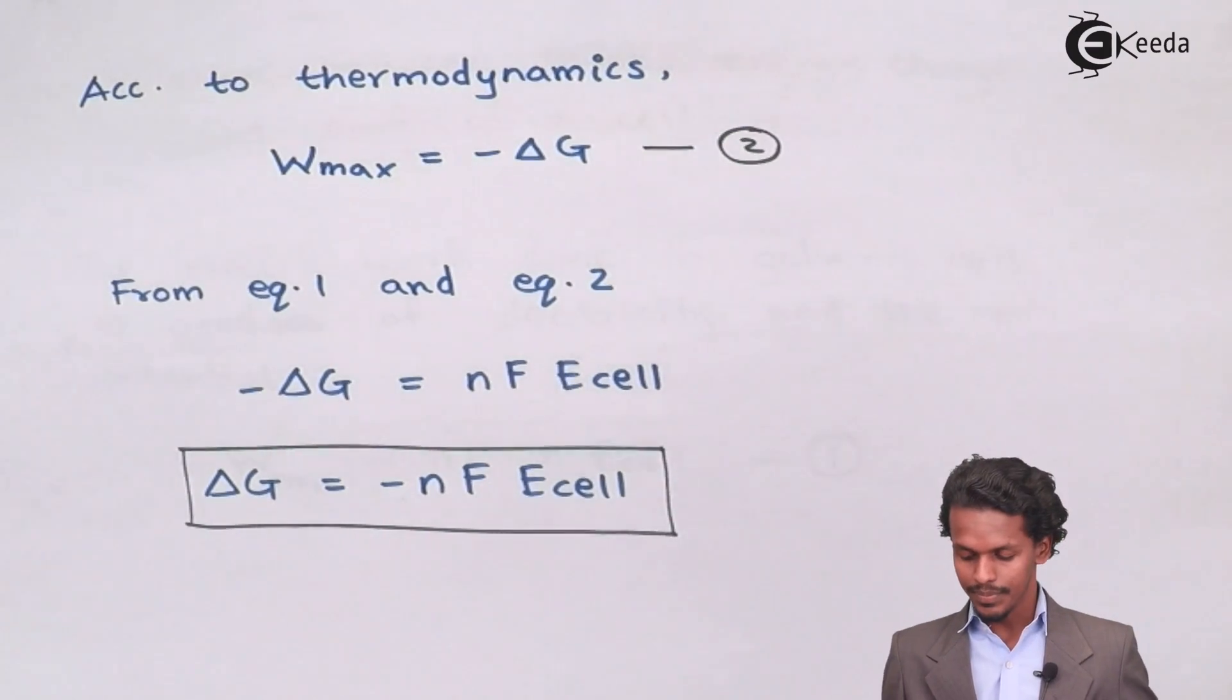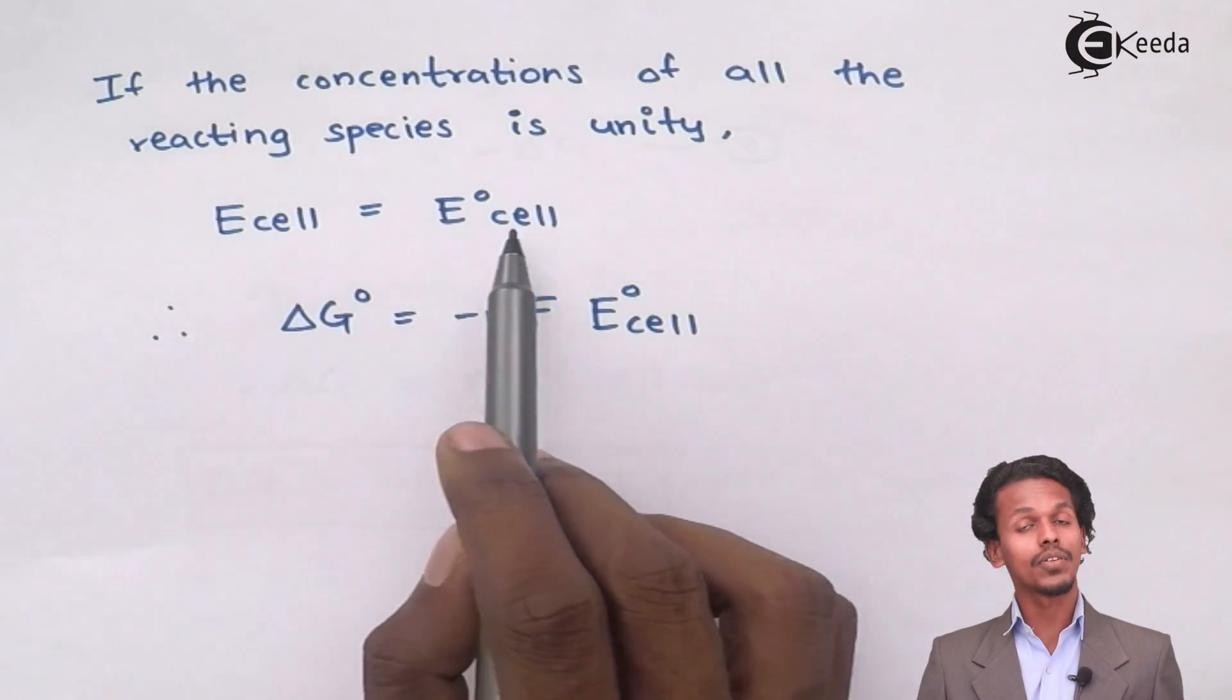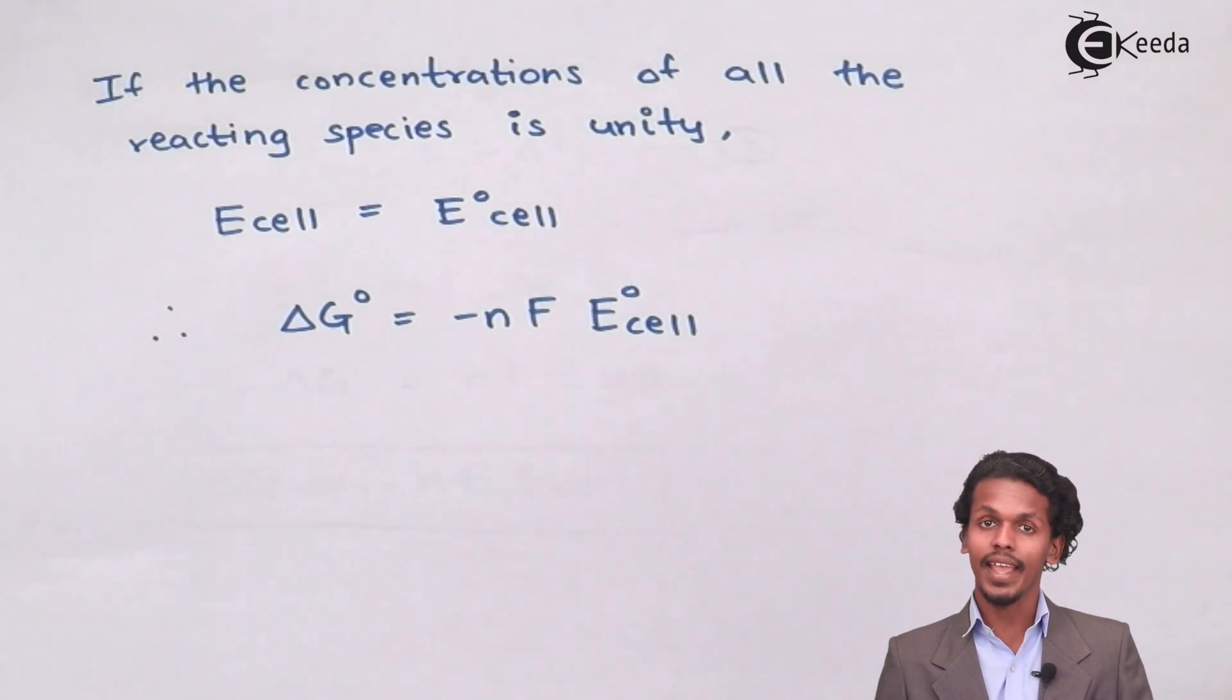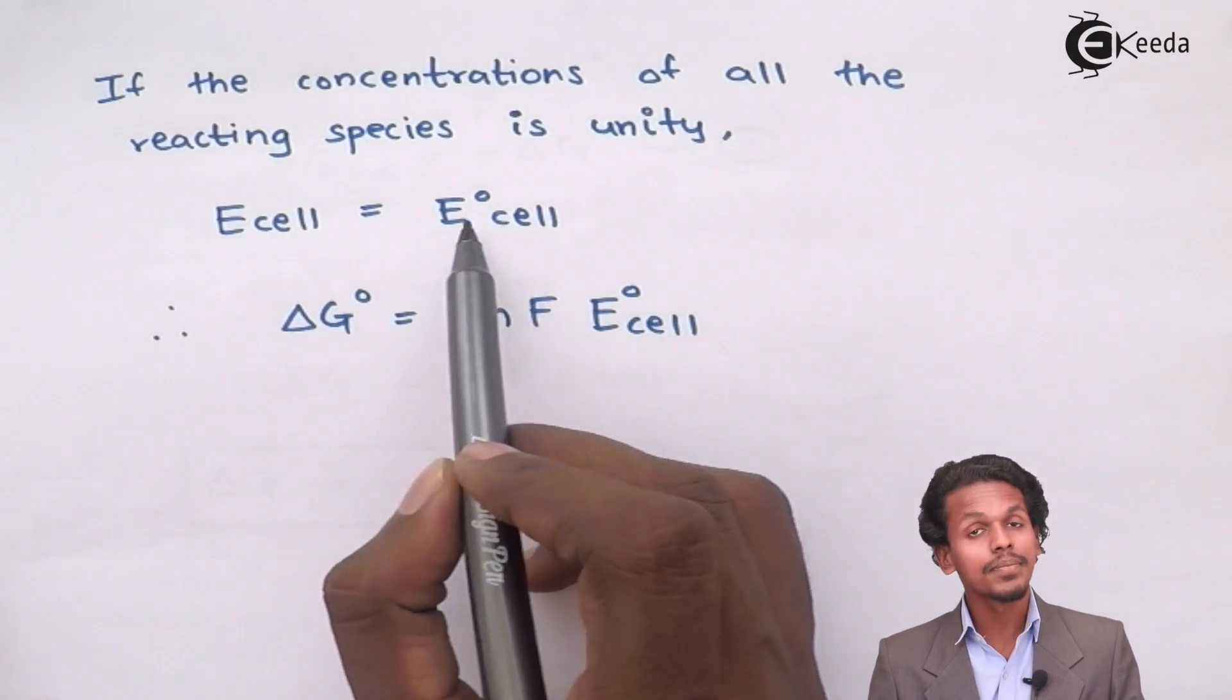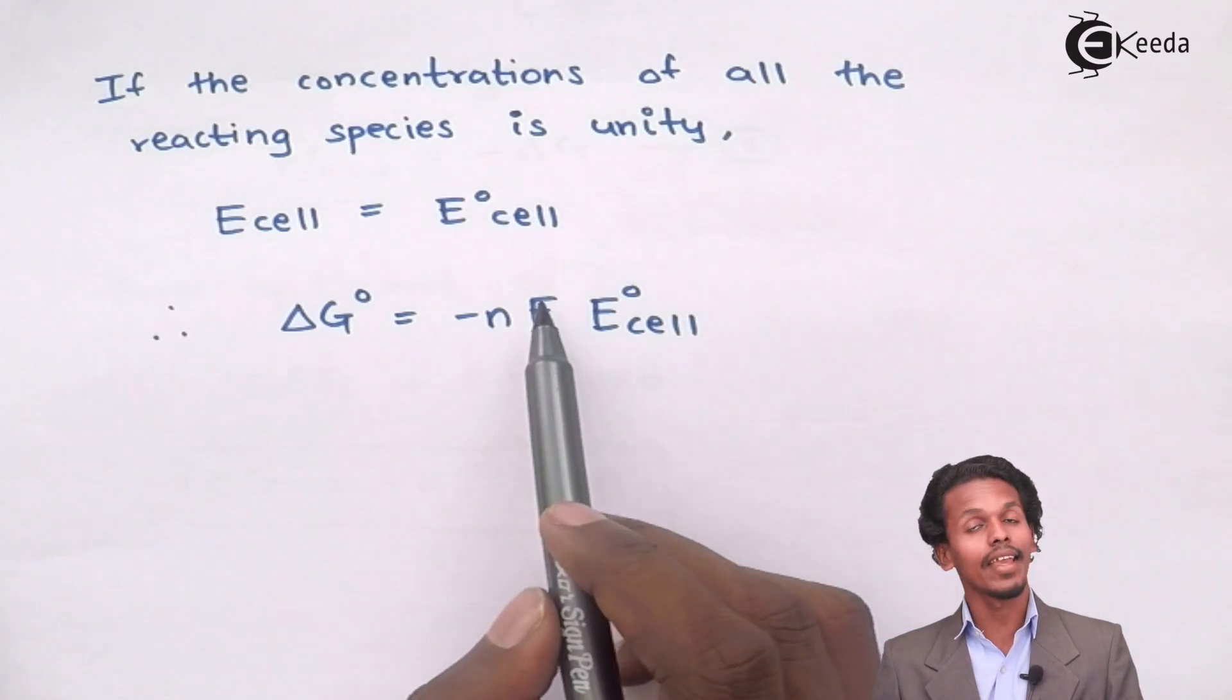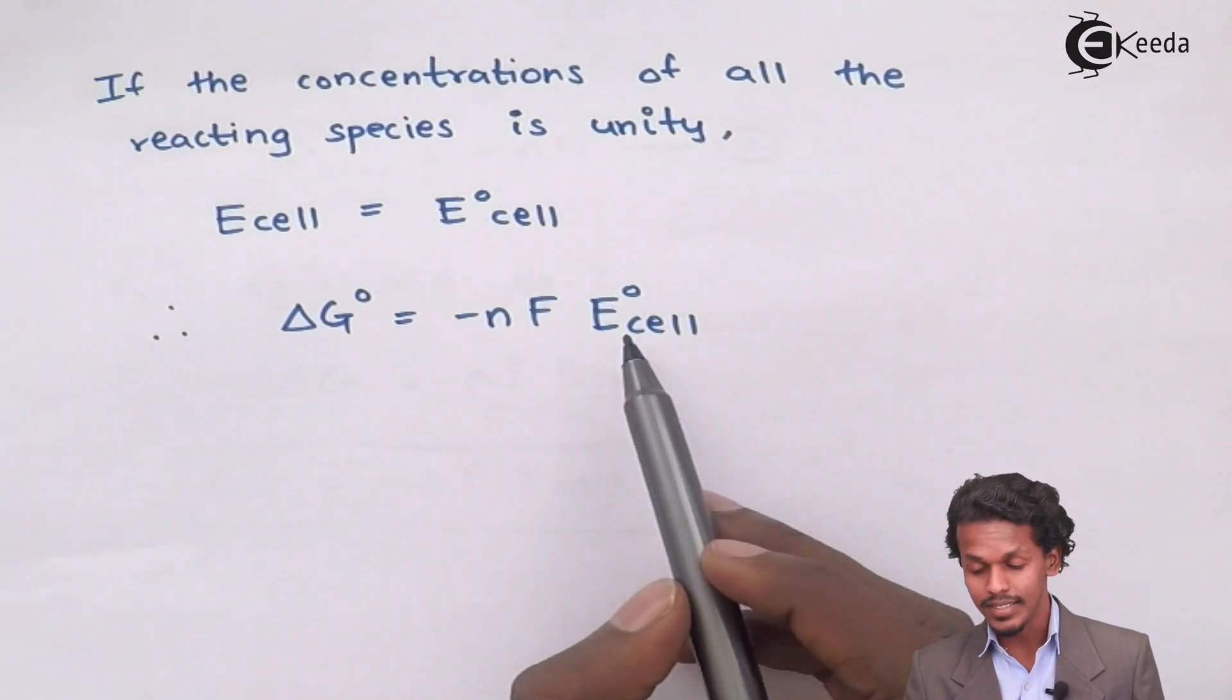Now let us talk about another case. Suppose in this case if the concentration of all the reactants and products are unity, then E cell will equal E naught cell. So in this case, if E cell equals E naught cell, then delta G naught will equal minus nF E naught cell. So this is how there is a relation between standard Gibbs free energy change and the standard cell potential.